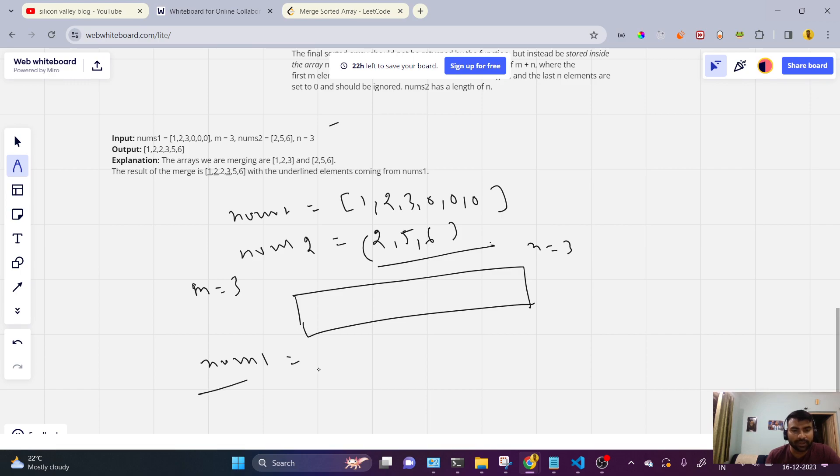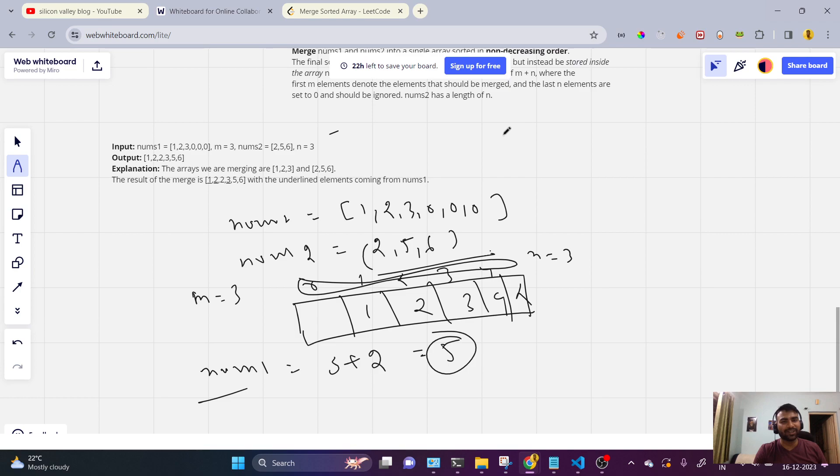m plus n means we are having 3 plus 2, so nums1 space, how much space will take? 3 plus 2, so 5. You should construct like 1, 2, 3, 4, 5. So it should be constructed like that. So what is the length? So let's now jump on the code.